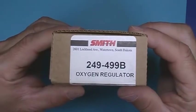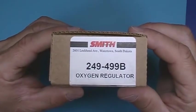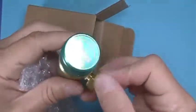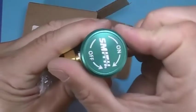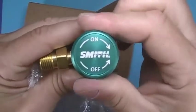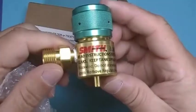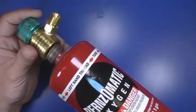The oxygen regulator is attached in a similar manner as the fuel regulator. Remove the oxygen regulator from its package. Make sure the oxygen regulator dial is in the off position. Attach the oxygen cylinder to the regulator.